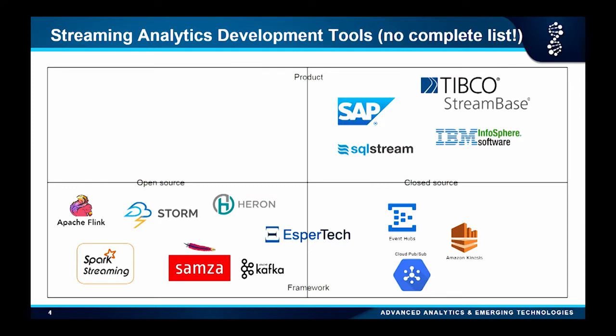Here are the tools. You can see there are tons of tools available. These are the open source ones, and these are the closed-source ones. On the product side we call them products, and here we call them frameworks. A framework means you need to do some base programming, but a product is often a visual development environment where everything is in one tool. For example, Kafka is just a messaging system — you need to hook it up with Spark Streaming to do processing.